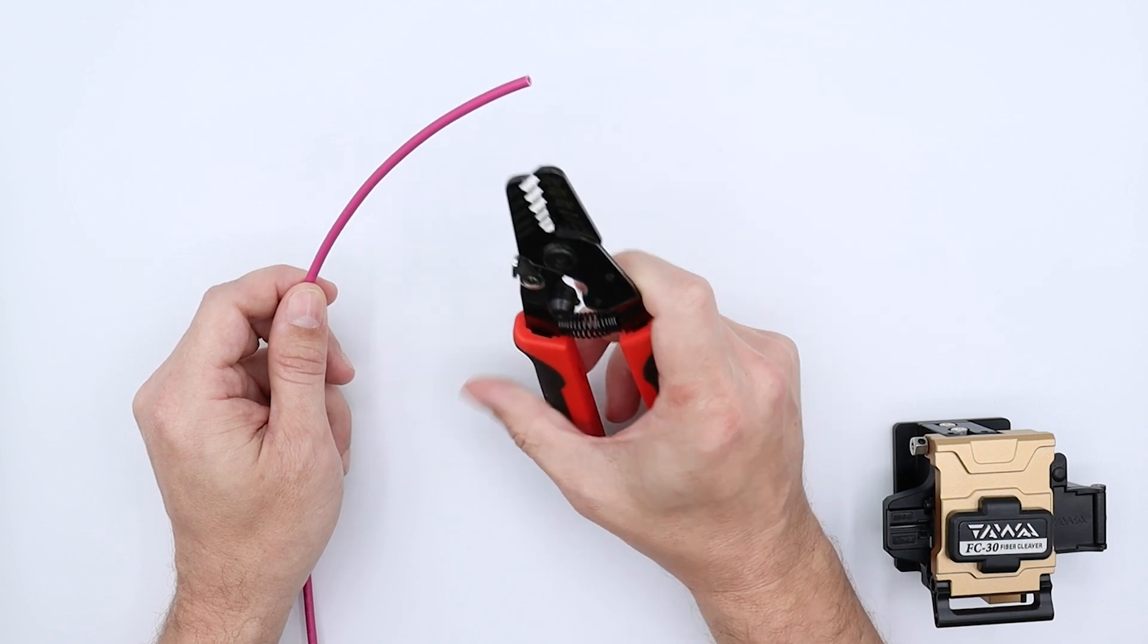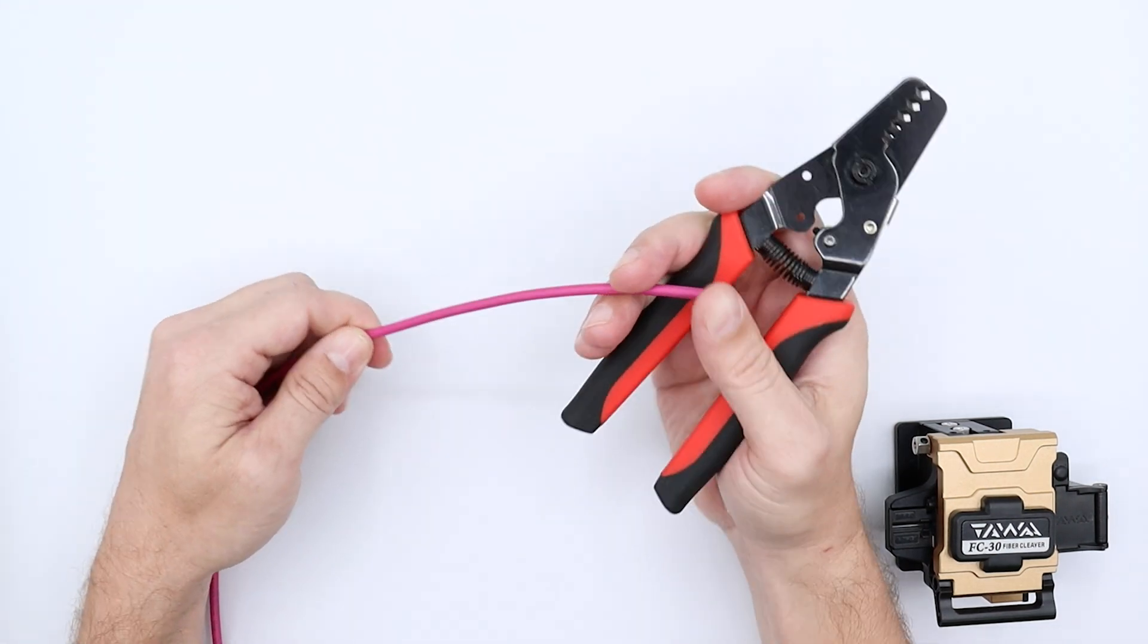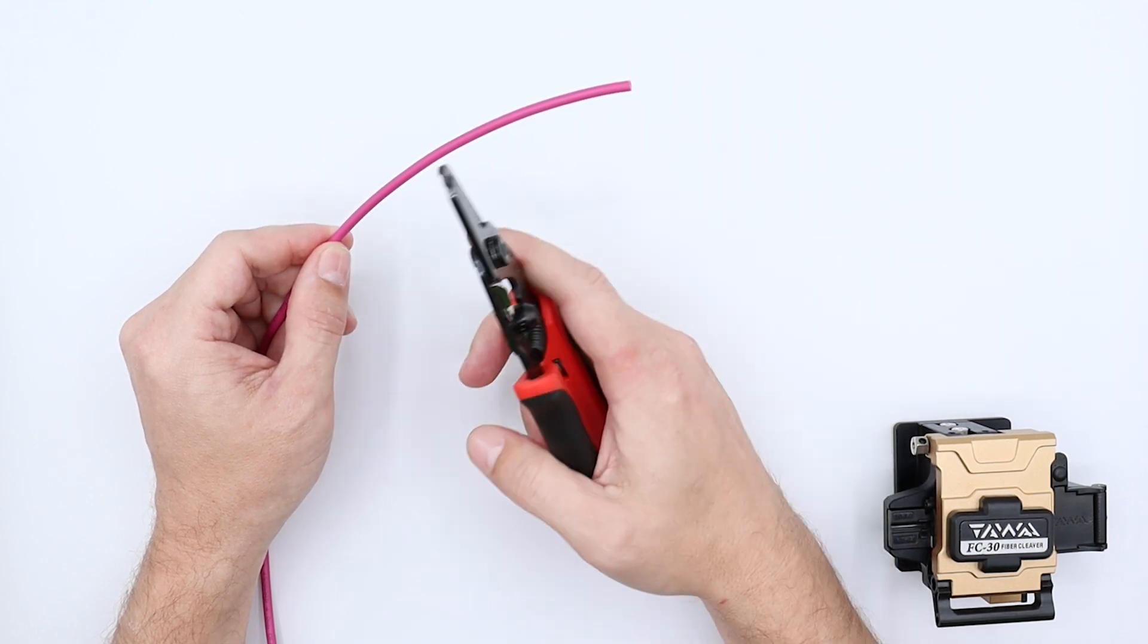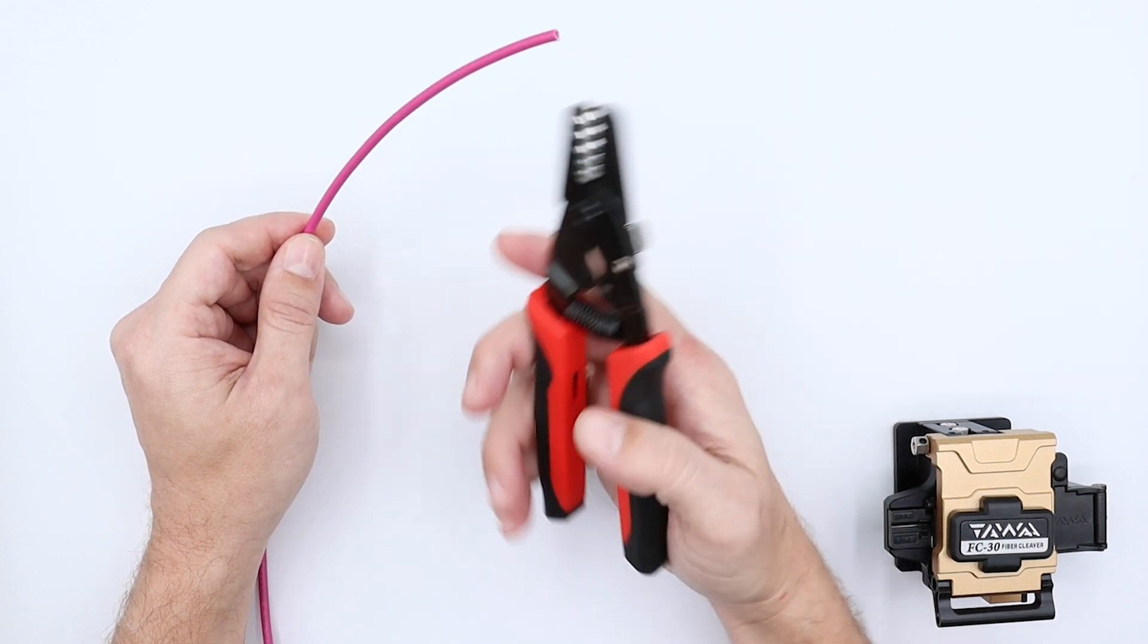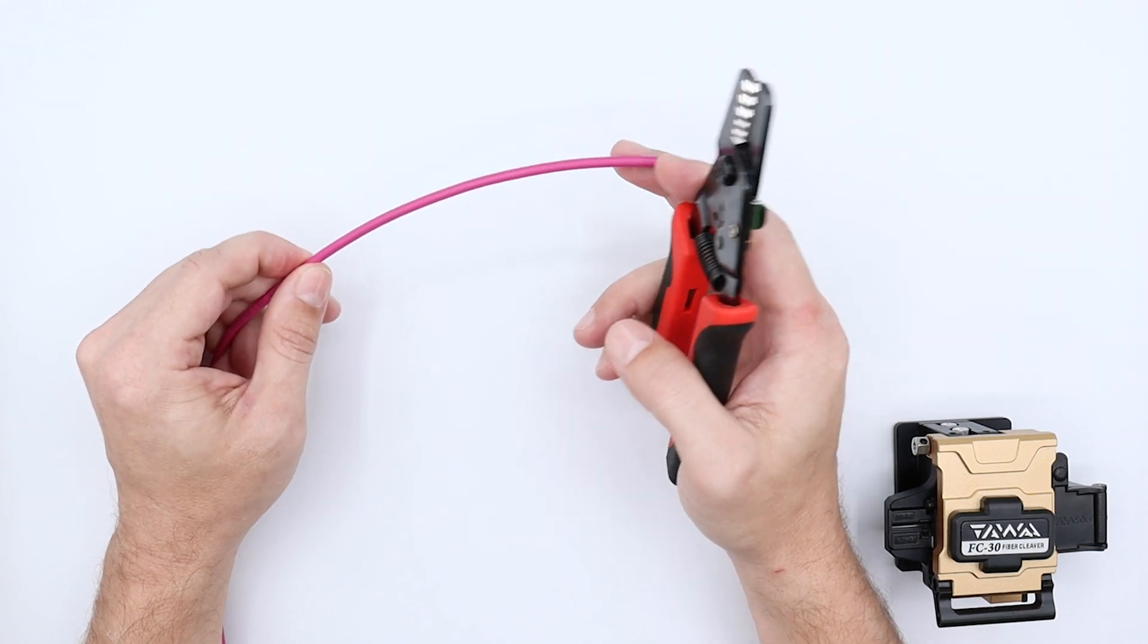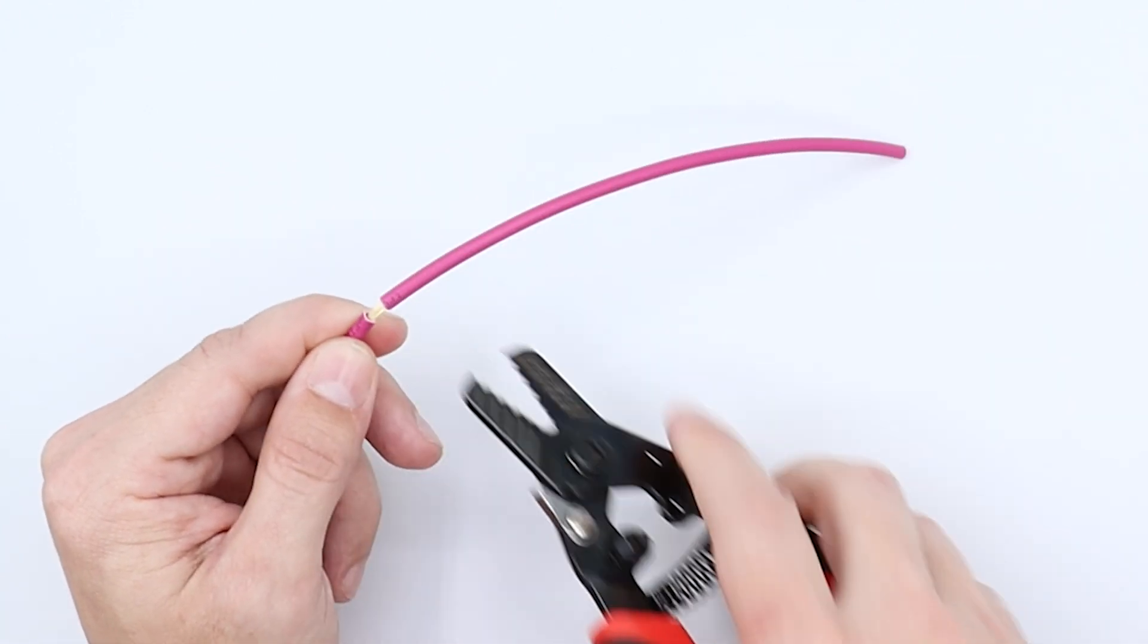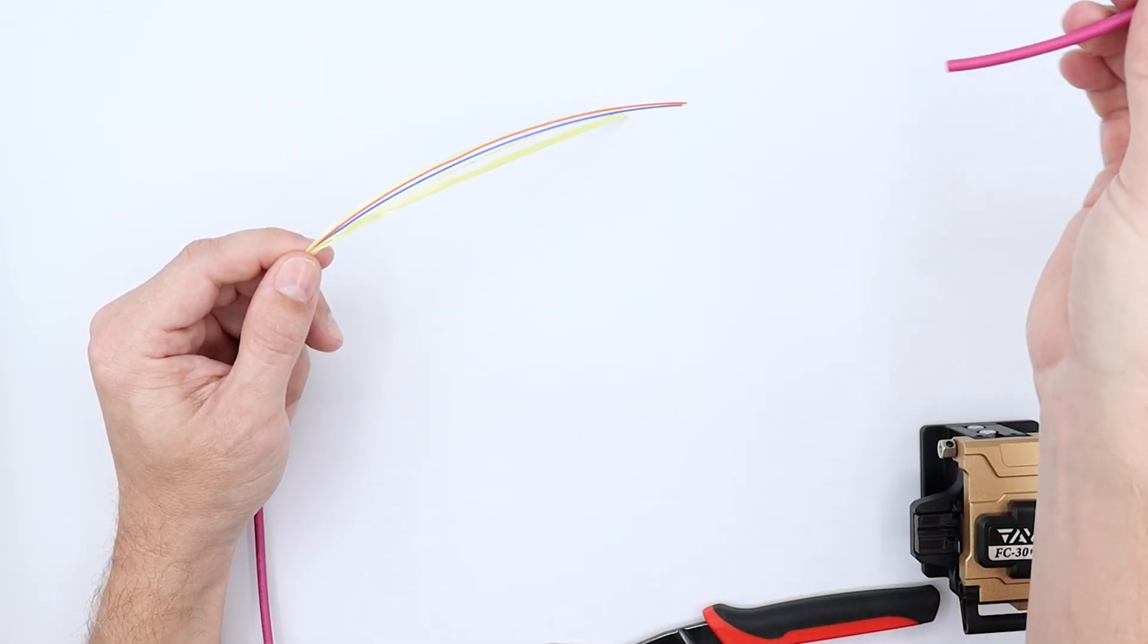We'll get started here and we'll take off the jacket first. With the jacket, it's really going to depend on the connector or the splice that you're making. That's going to be kind of dependent on how far back you're going to need to cut that back. But in this case for demonstration purposes, we're going to cut it back about 6 to 8 inches. It's just a quick little score, and when you do that it just simply really easily slides off.